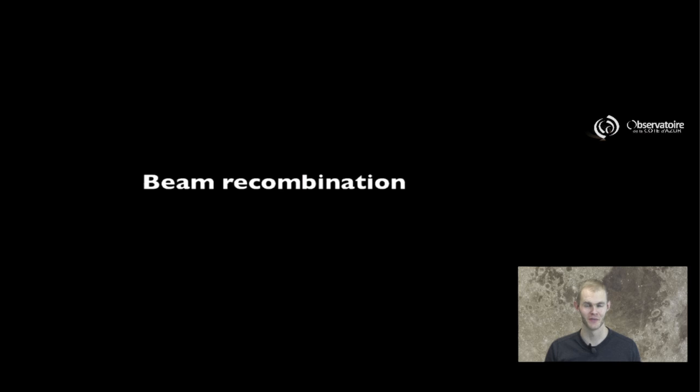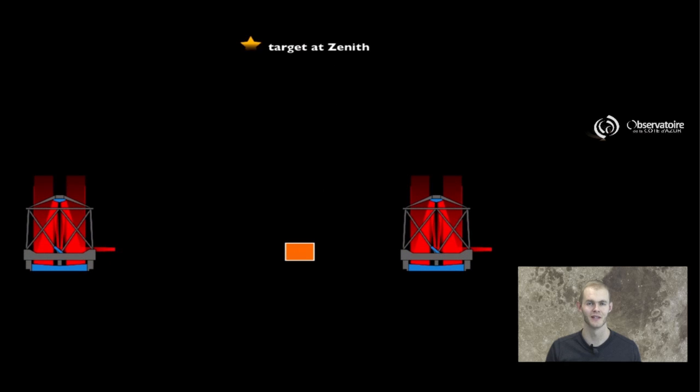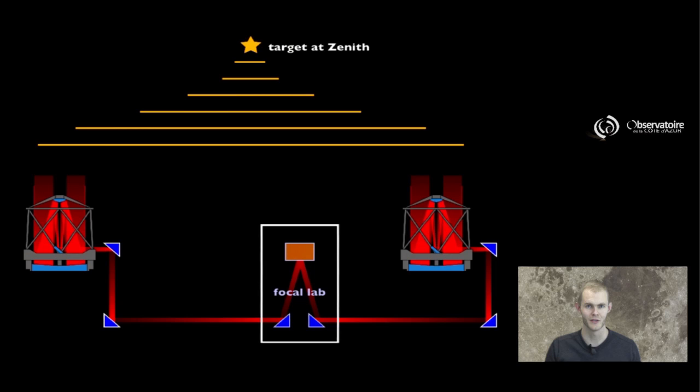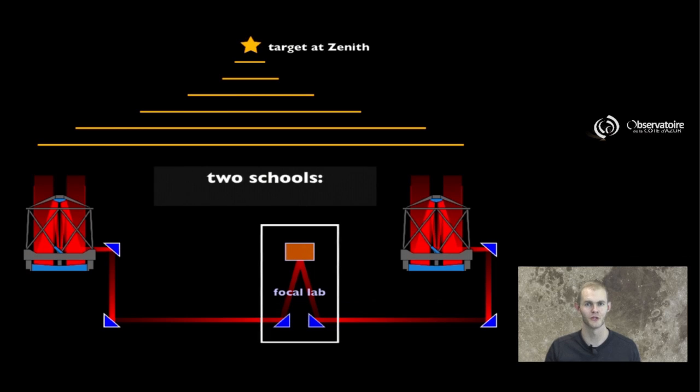Now that we've made sure that the light collected by our two telescopes reaches our camera at the same time, we can finally look into the details that make up the actual beam recombiner. There are really two ways to go about designing one such focal station.